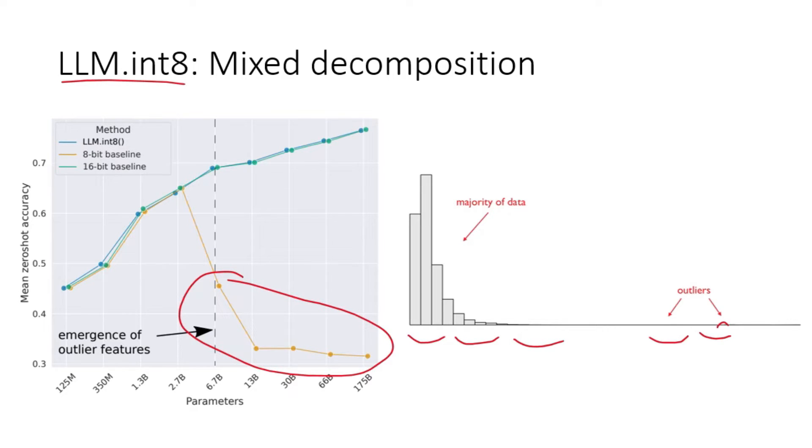To solve this problem, they proposed a mixed decomposition scheme where the outliers are handled separately from the majority of the data. This is not necessary when you're running smaller models, but useful to know if you ever plan to quantize larger language models.